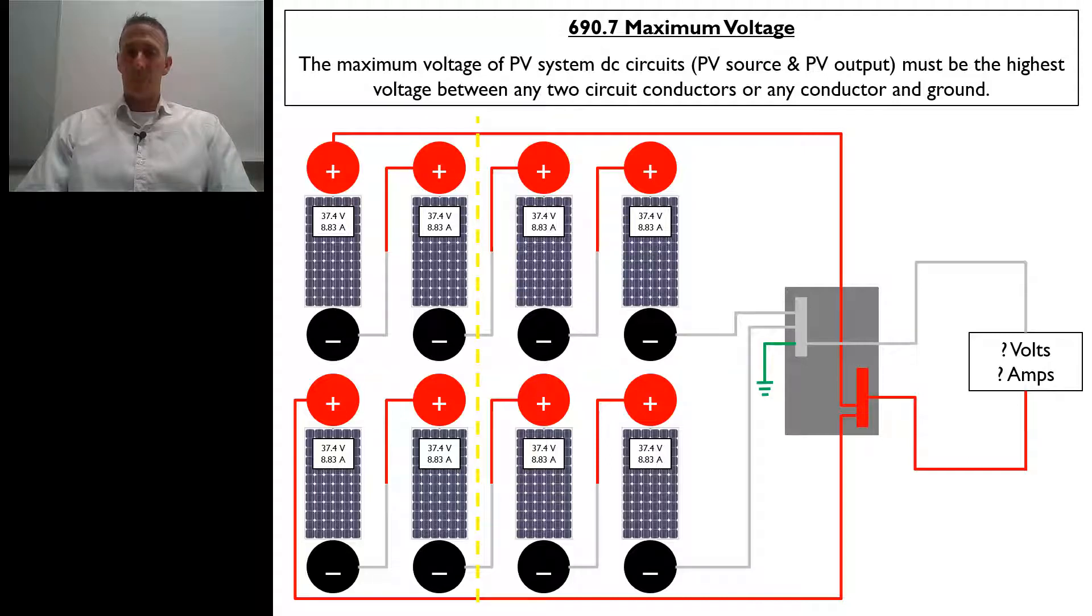What they're stating there is that when you're measuring that voltage, it's always going to be the highest voltage between any two circuit conductors. Whether it's the positive and negative, positive and ground, negative and ground, whatever it is, that highest voltage is going to be related to a measurement between two different conductors. Because you're basically looking for the maximum voltage between any combination of conductor and their configurations.